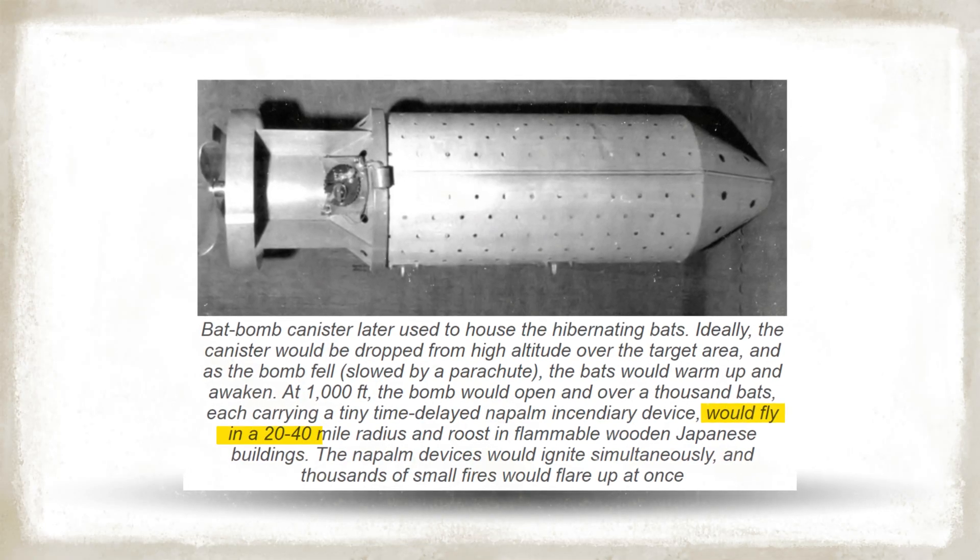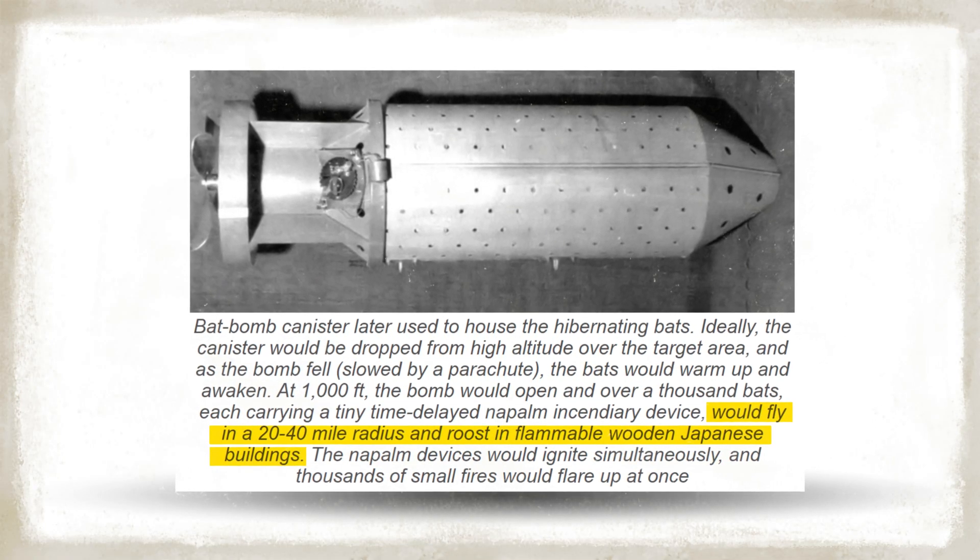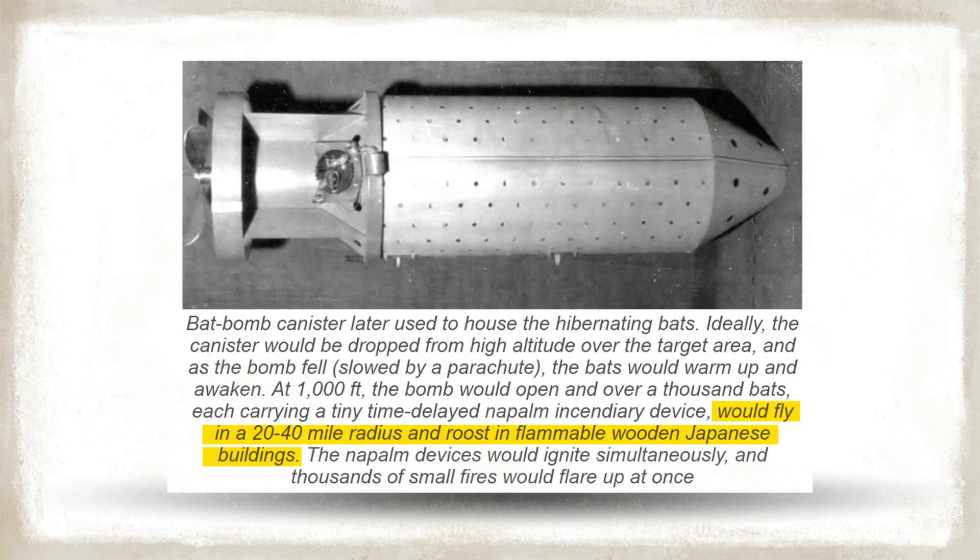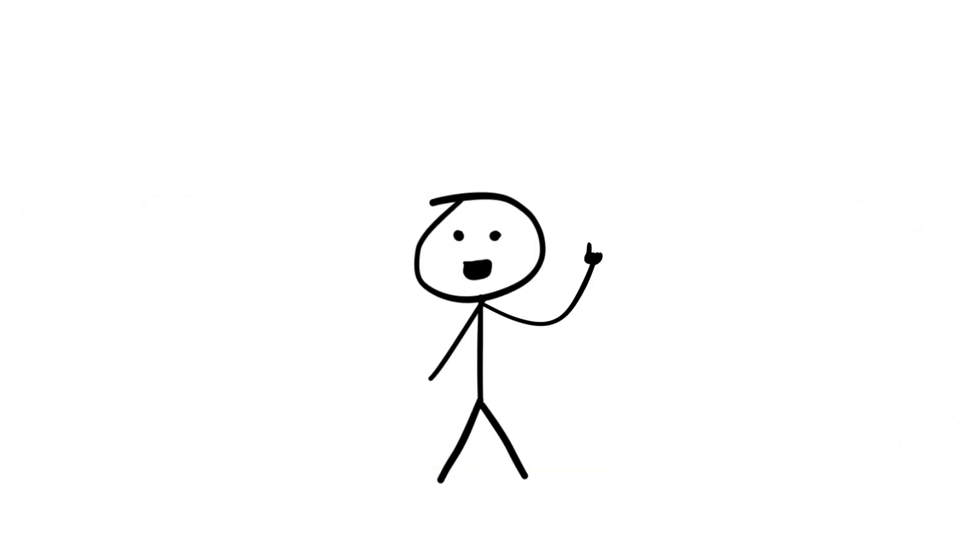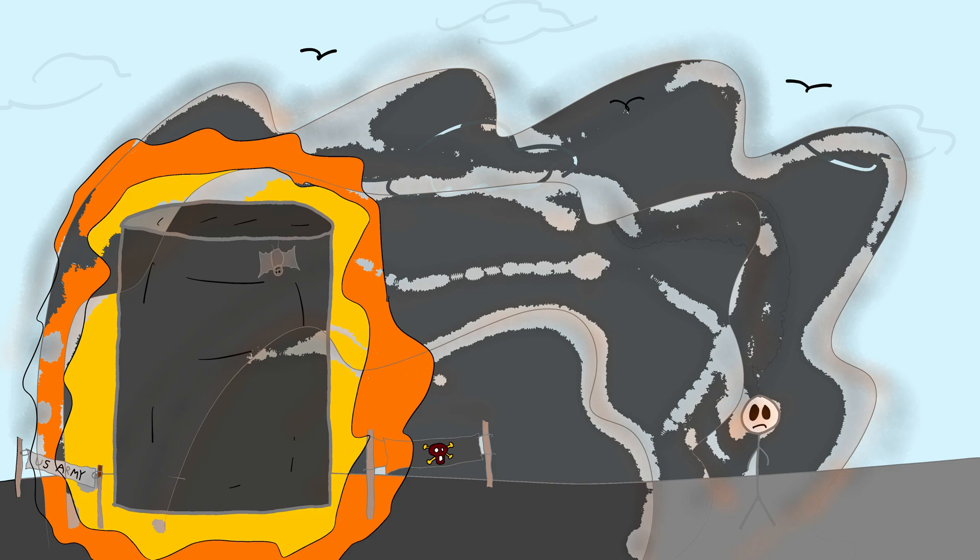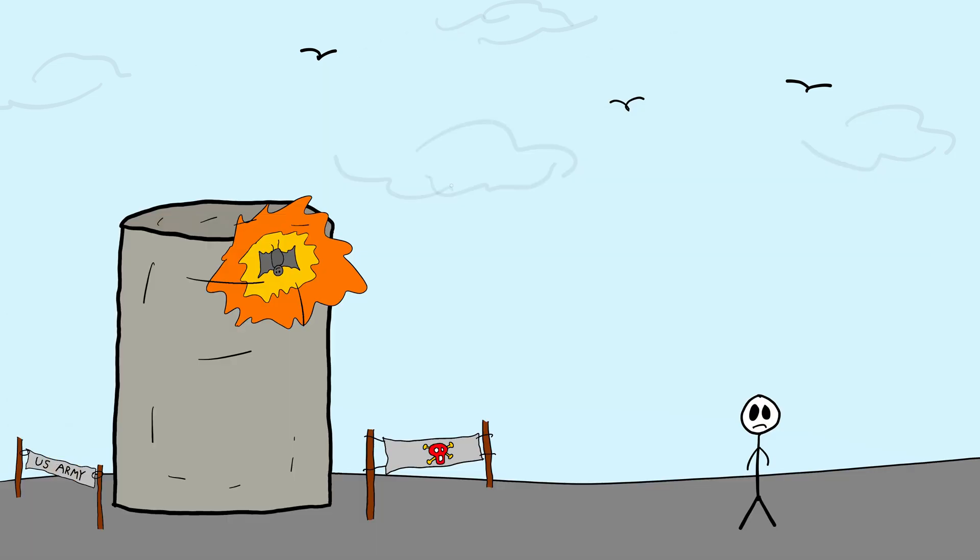The Mexican free-tailed bats were selected for the experiment due to their roosting habits and abundance. But things went wrong when, during testing, a few bats got away and blew up a US military airbase. The main cause for this is that when the incendiary devices set off at the Carlsbad Army Airfield, an accidental fire broke out because some of the bats hid under a fuel tank.